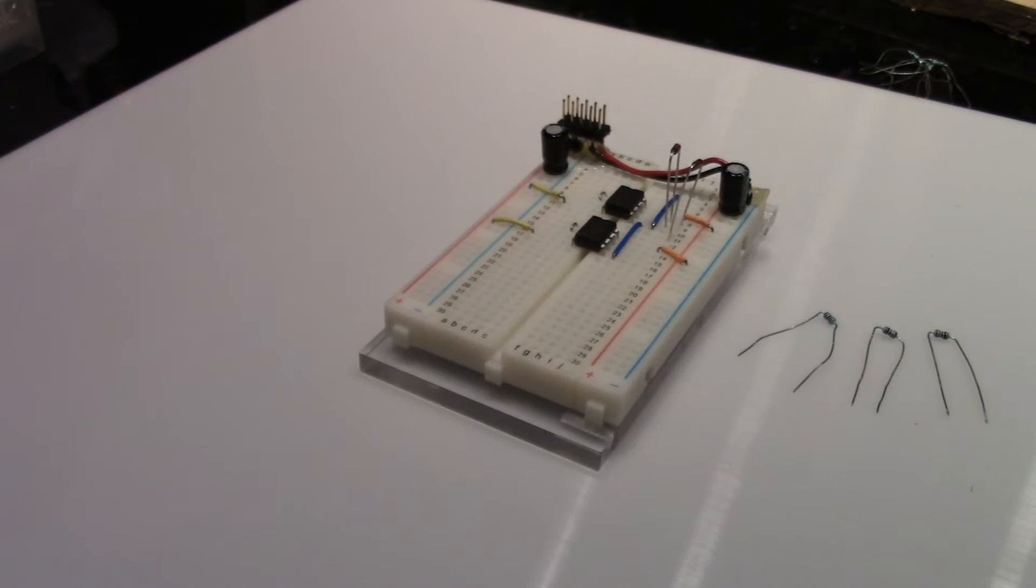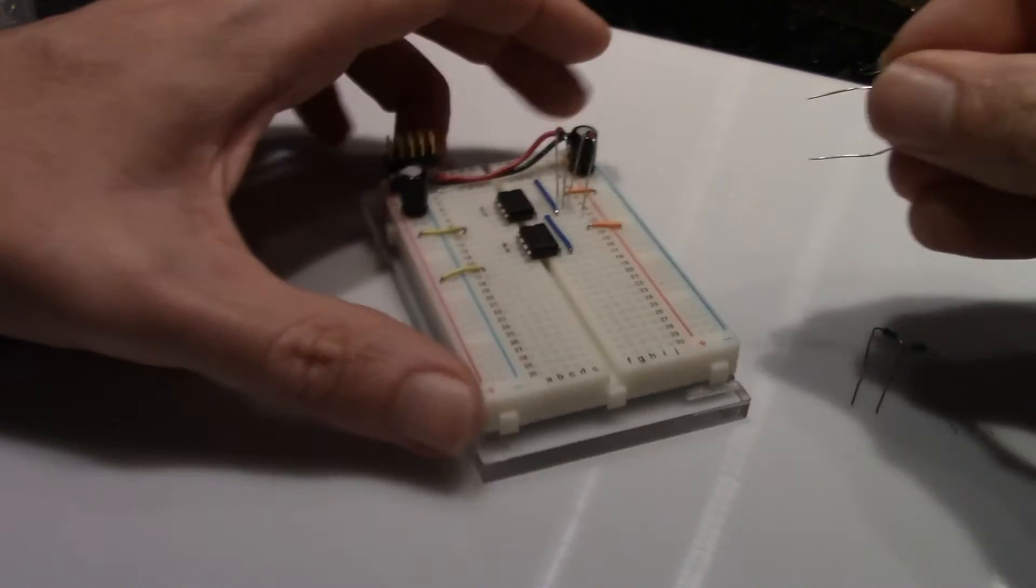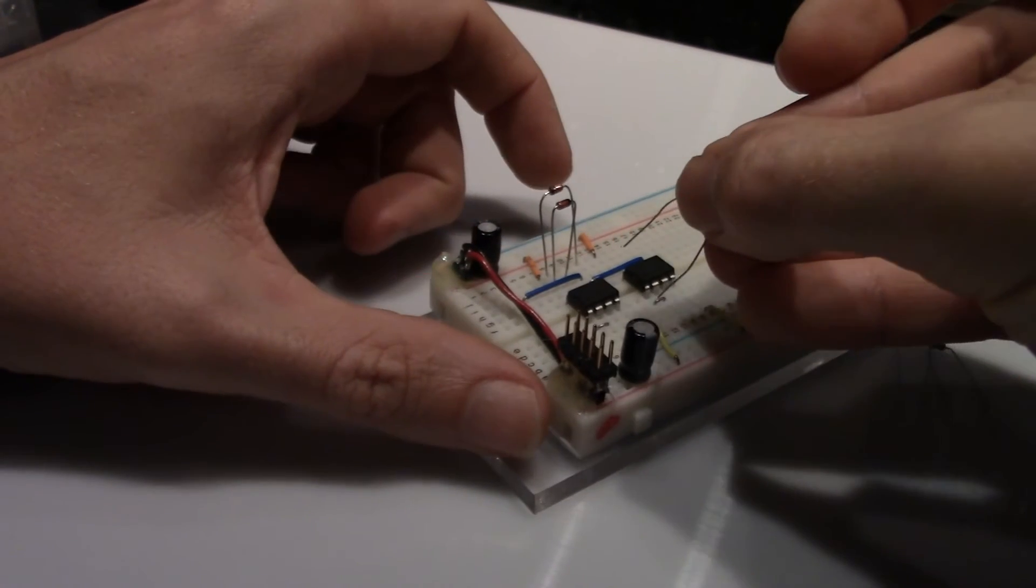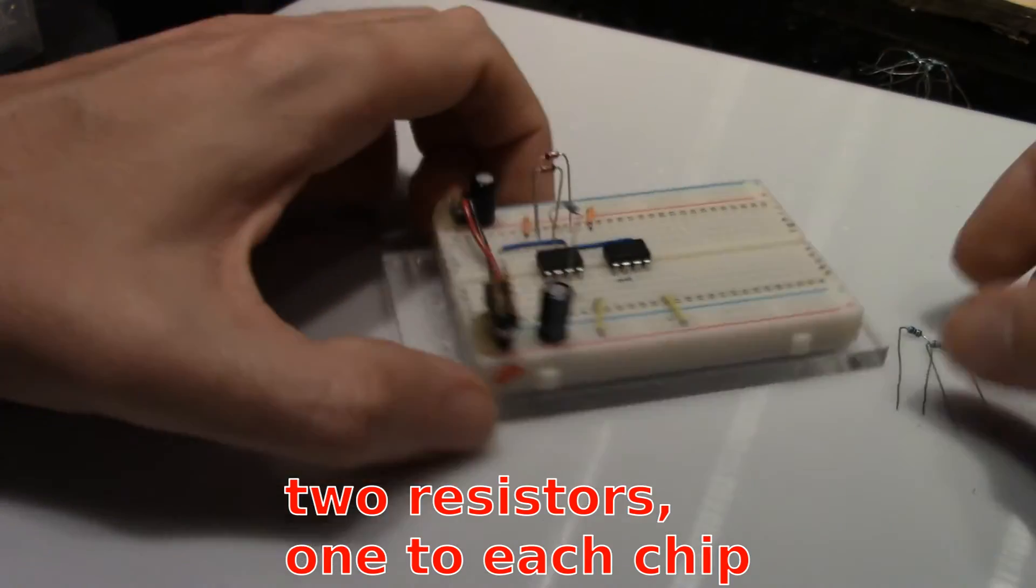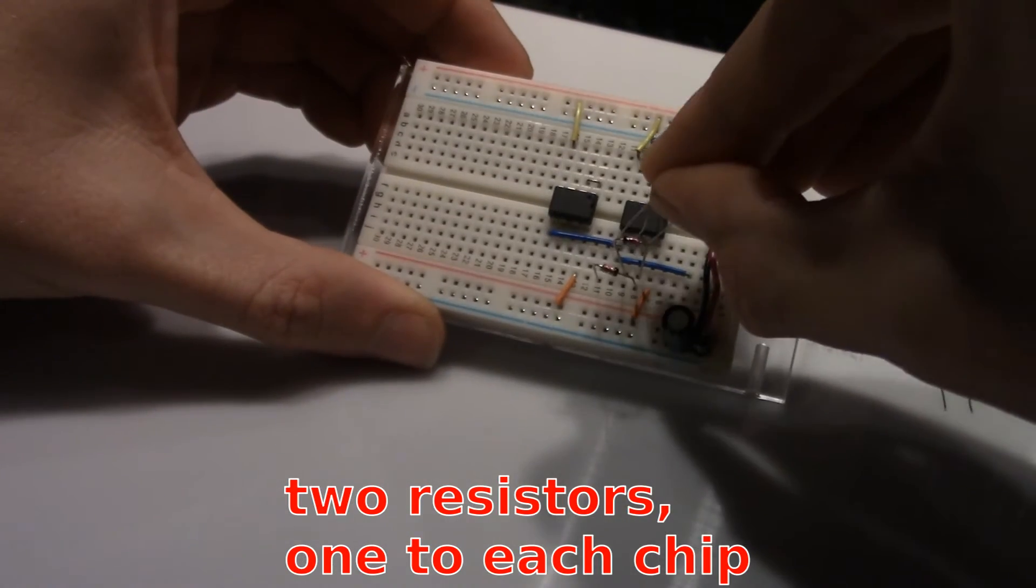The 10k ohm resistors can now be added. The first goes between the output of the left op amp and the negative input of the right op amp on the first chip. Then a 10k resistor from the diode to the negative input of the right op amps of both chips.